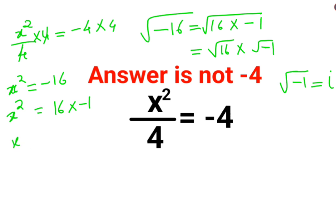We will say x = ±√(16 × -1). So this comes out to be ±4√-1, which comes out to be ±4i.